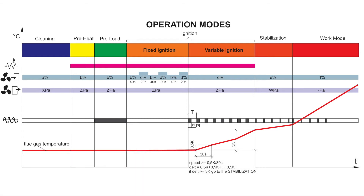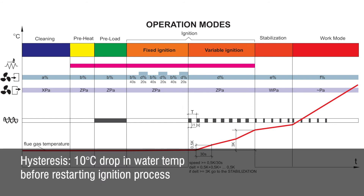The boiler operates on PID modulation, so it will modulate freely between 30% and 100% of boiler output. Once it reaches the target temperature, it will continue to run at its lowest power for an extra 5 degrees Celsius temperature rise before going to the burning off extinguishing stage. Burning off lasts for a minimum of 7 minutes. Once burning off is finished, it enters final cleaning, which is compressor charging for 120 seconds. The boiler will remain in standby until the temperature drops by 10 degrees Celsius to restart the ignition sequence again.